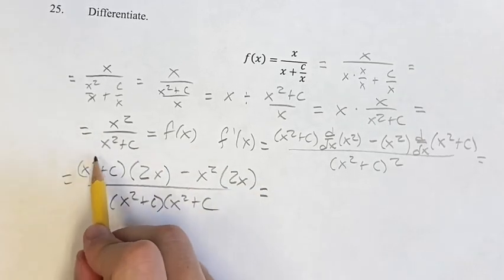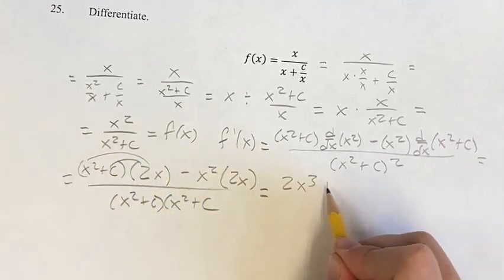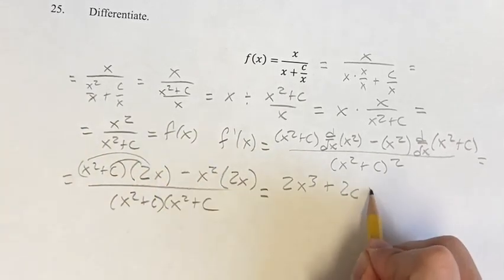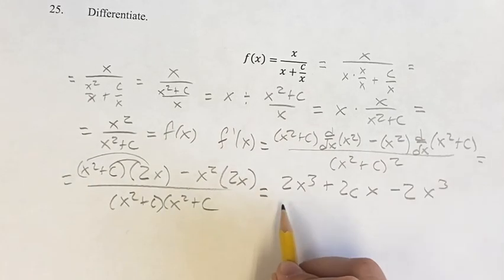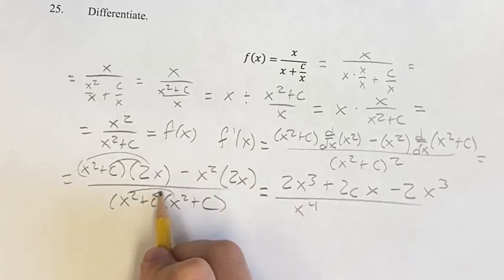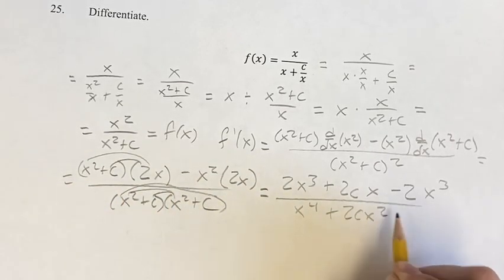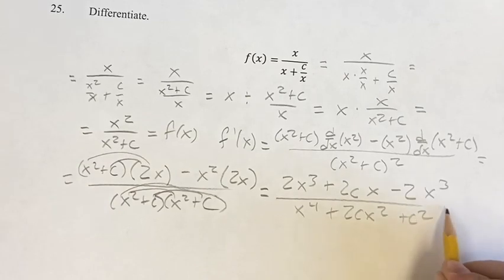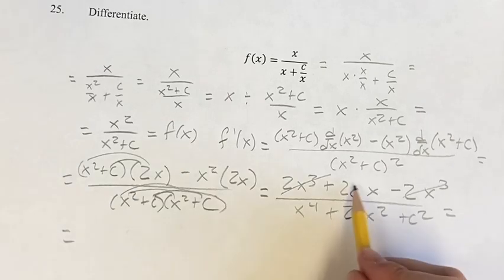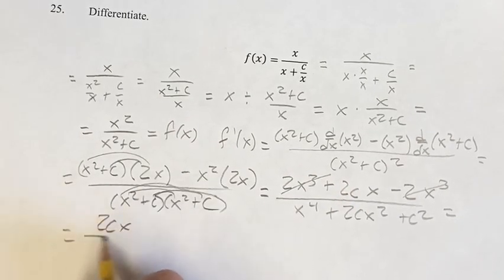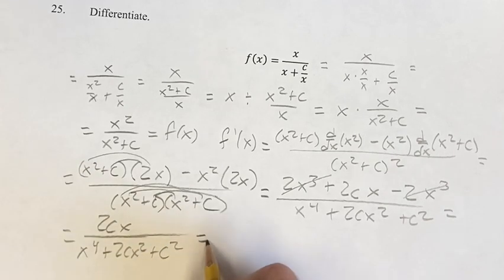Now, this is equal to 2x squared times x is x cubed plus 2cx minus 2x squared times x is x cubed over x to the fourth plus cx squared plus another cx squared is 2cx squared plus c squared. And this is equal to 2x cubed minus 2x cubed is 0. So we're just left with 2cx on top over x to the fourth plus 2cx squared plus c squared. And this is your derivative.